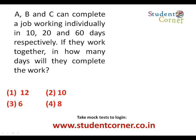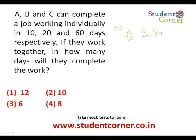Next question: A, B, and C can complete a job working individually in 10, 20, and 60 days respectively. In one day: A does 1/10th, B does 1/20th, and C does 1/60th of the work. Using the LCM method — the LCM of 10, 20, and 60 is 60, so the total work is 60 units.